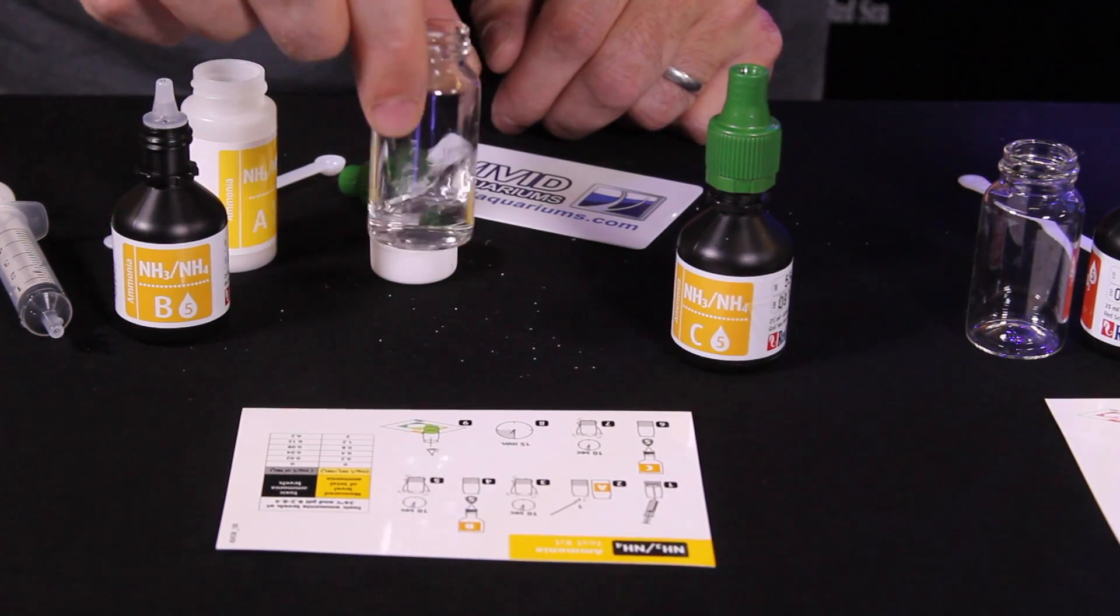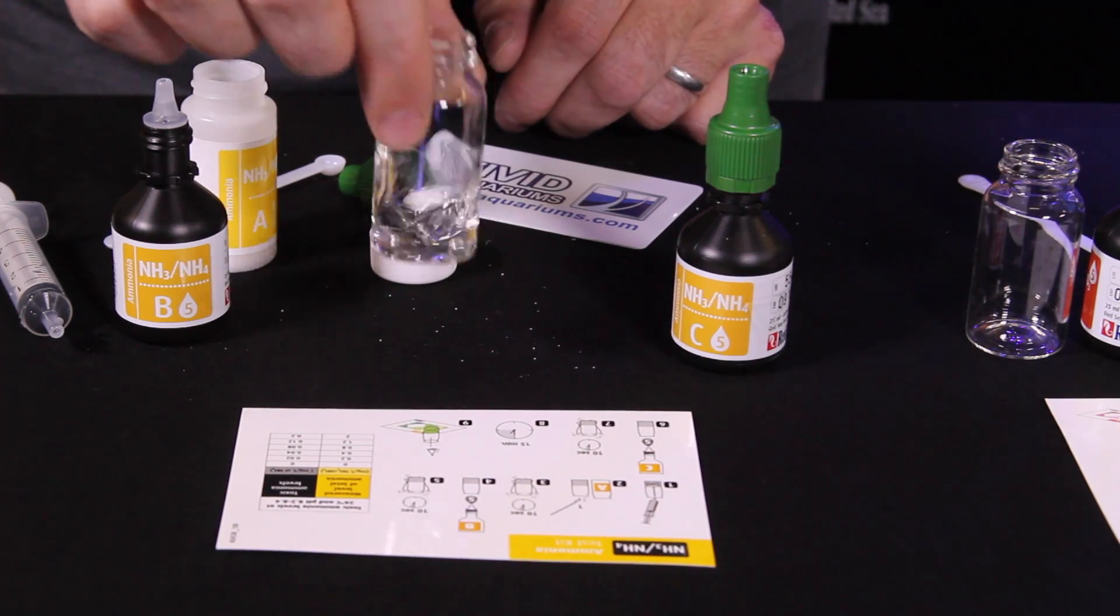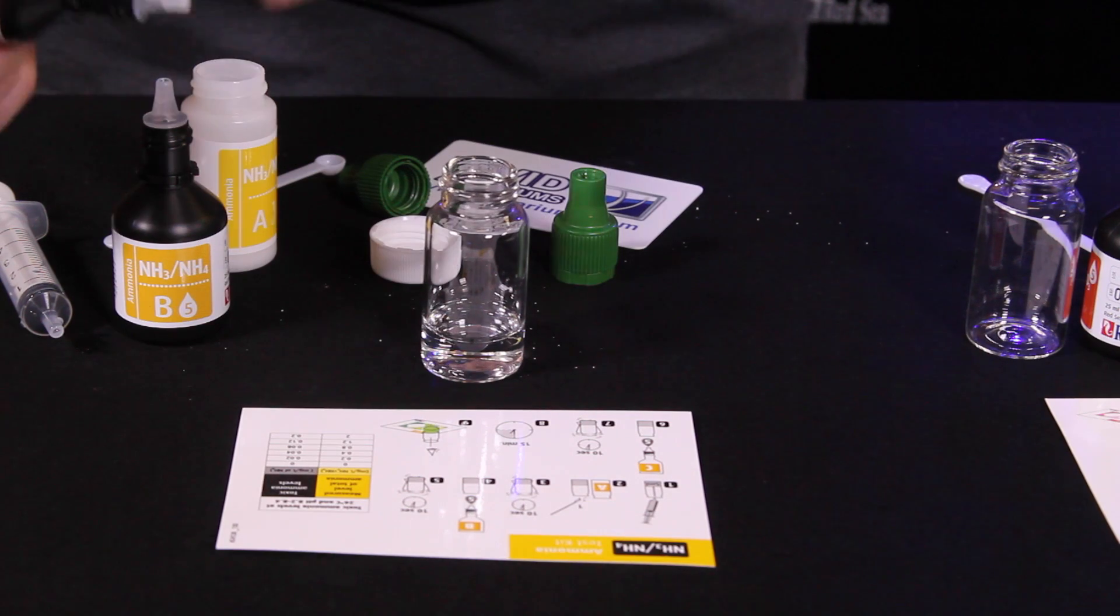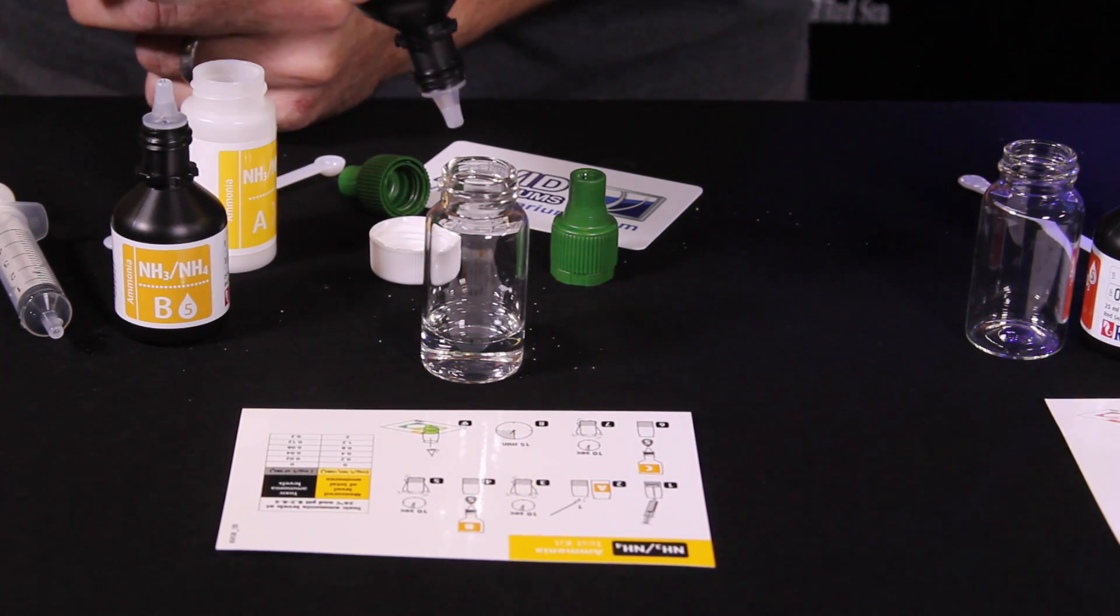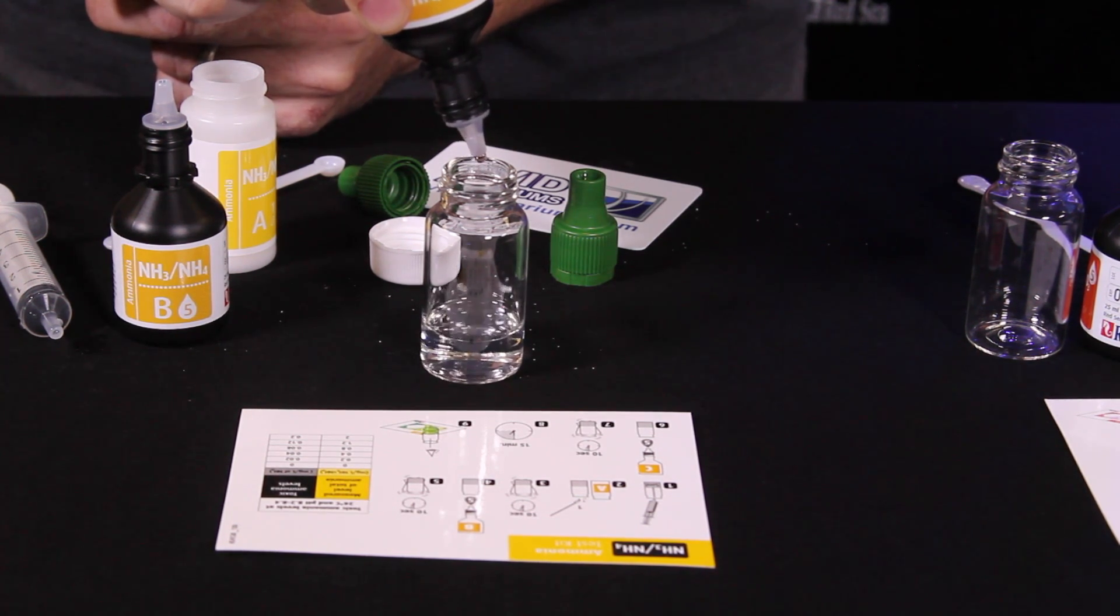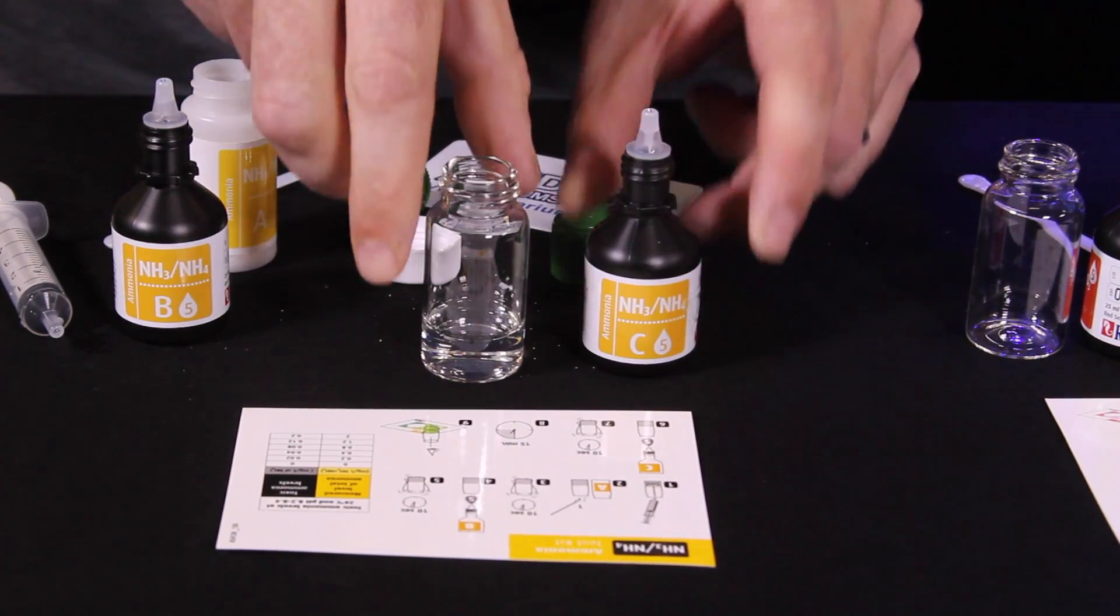Now we need to swirl again for 10 seconds. Make sure it's evenly mixed. Now the next step is reagent C. Again, five drops. There's five drops of reagent C.